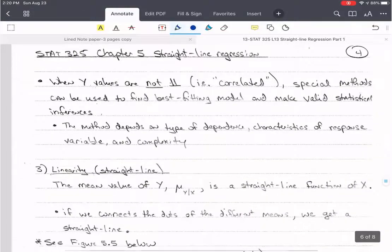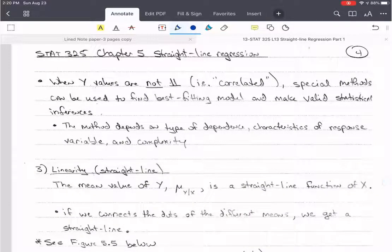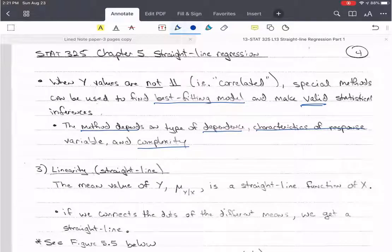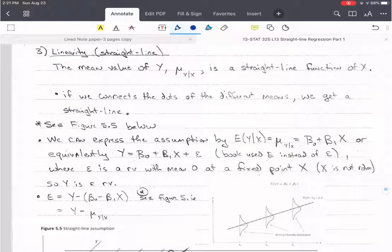So we want to make sure that we have to take special considerations and we have to account for the dependency if it's taken over time. If we violate this assumption, then it's very often that we get invalid conclusions. We don't want that. So now, when the y values are not independent, they're definitely correlated. And again, there's special methods that we use to find the best fitting model and make valid statistical inferences. And that method, that special method, depends on how much of a dependence there is, the type of dependence, the characteristics of the response variable, and the complexity of the situation as well. So those are all considerations. If we get to them, we'll talk about them much later in the course.